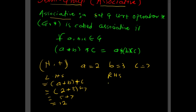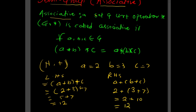For the right-hand side (RHS), compute a + (b + c), which is 2 + (3 + 7) = 2 + 10 = 12. We can see that LHS equals RHS, so natural numbers under the addition operator satisfy the associative property.